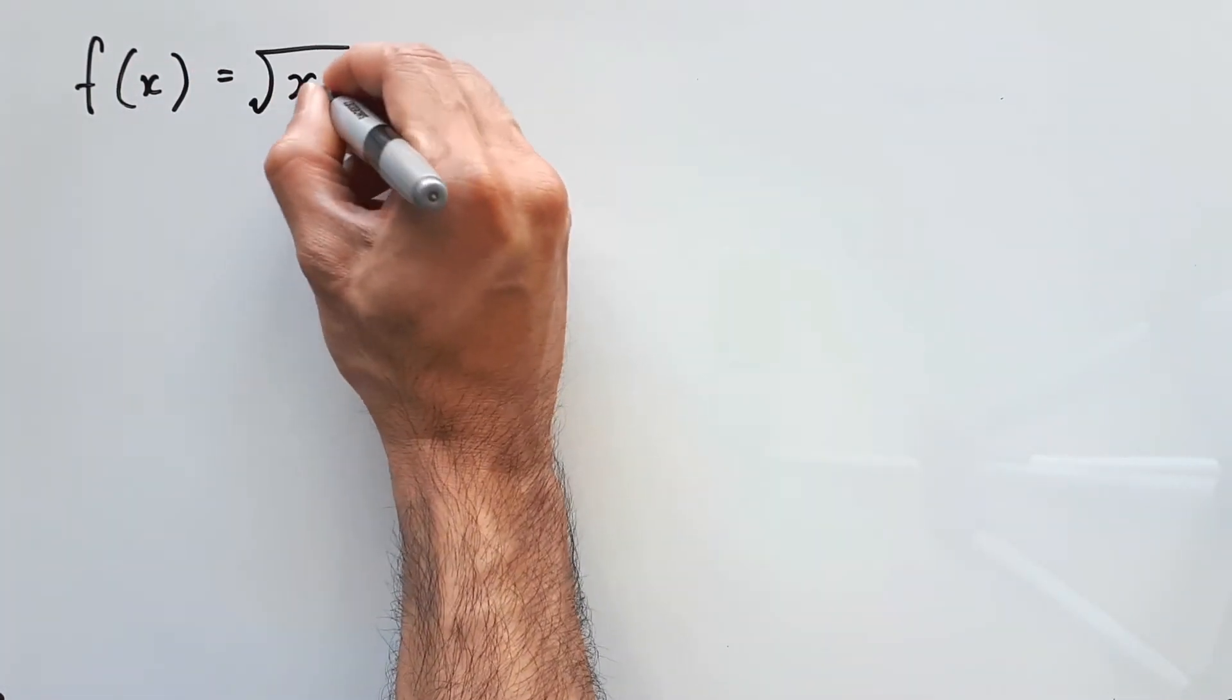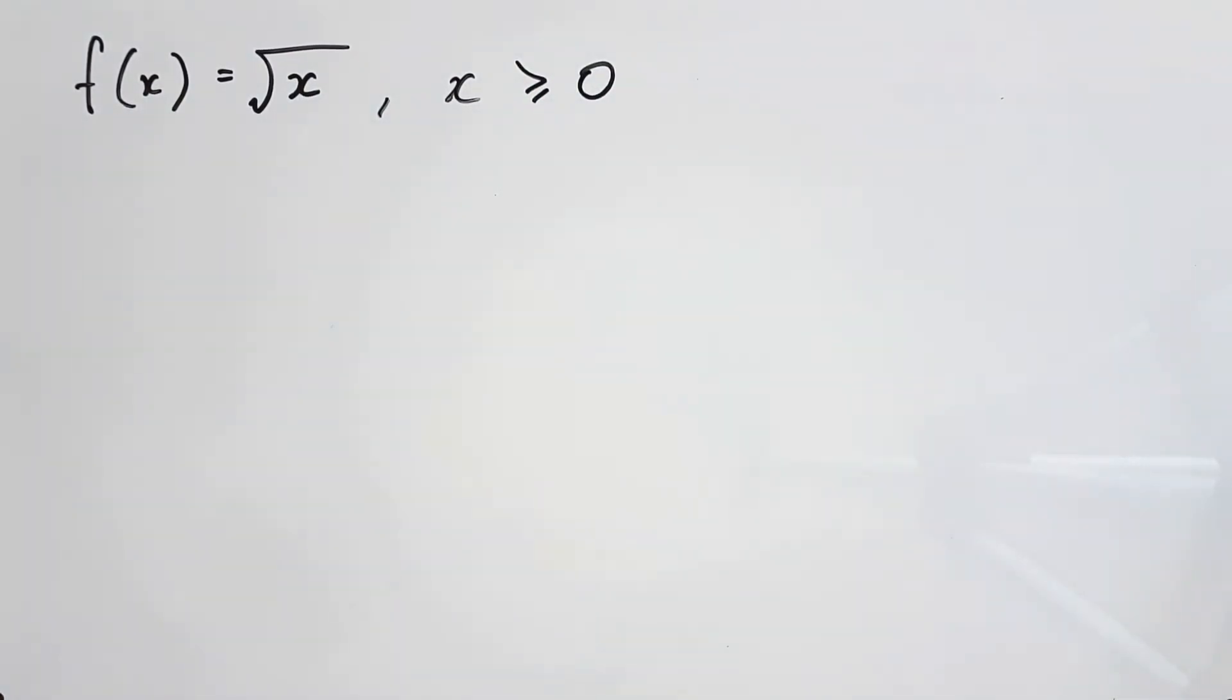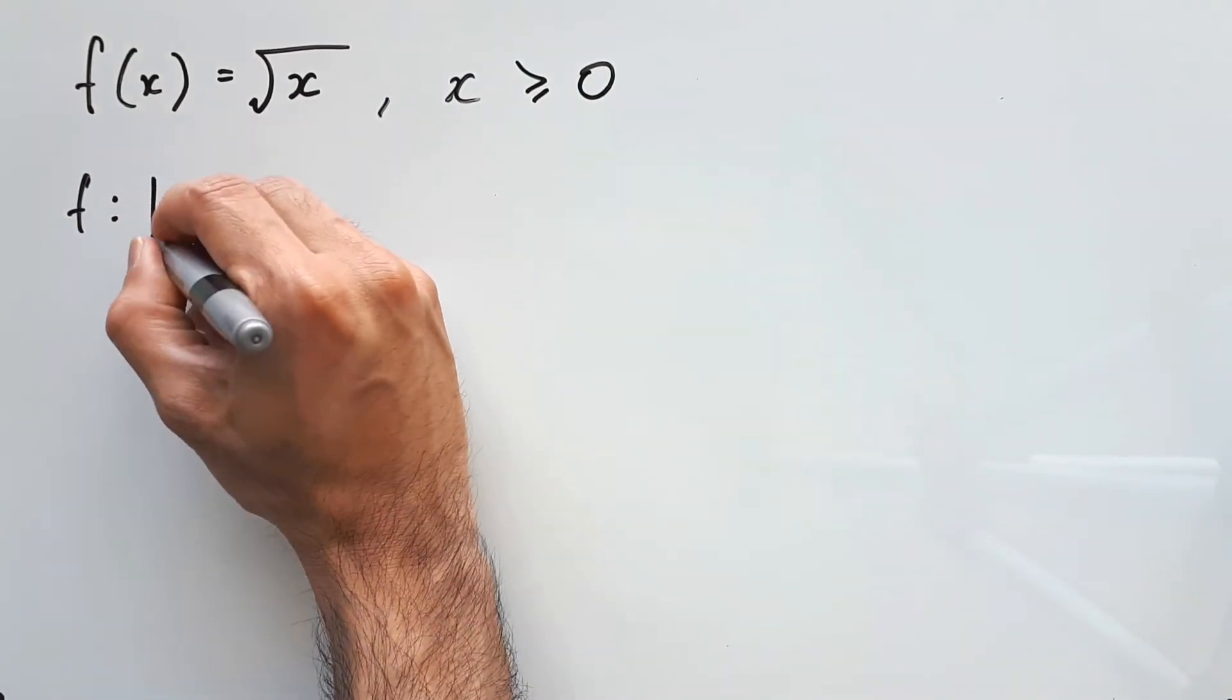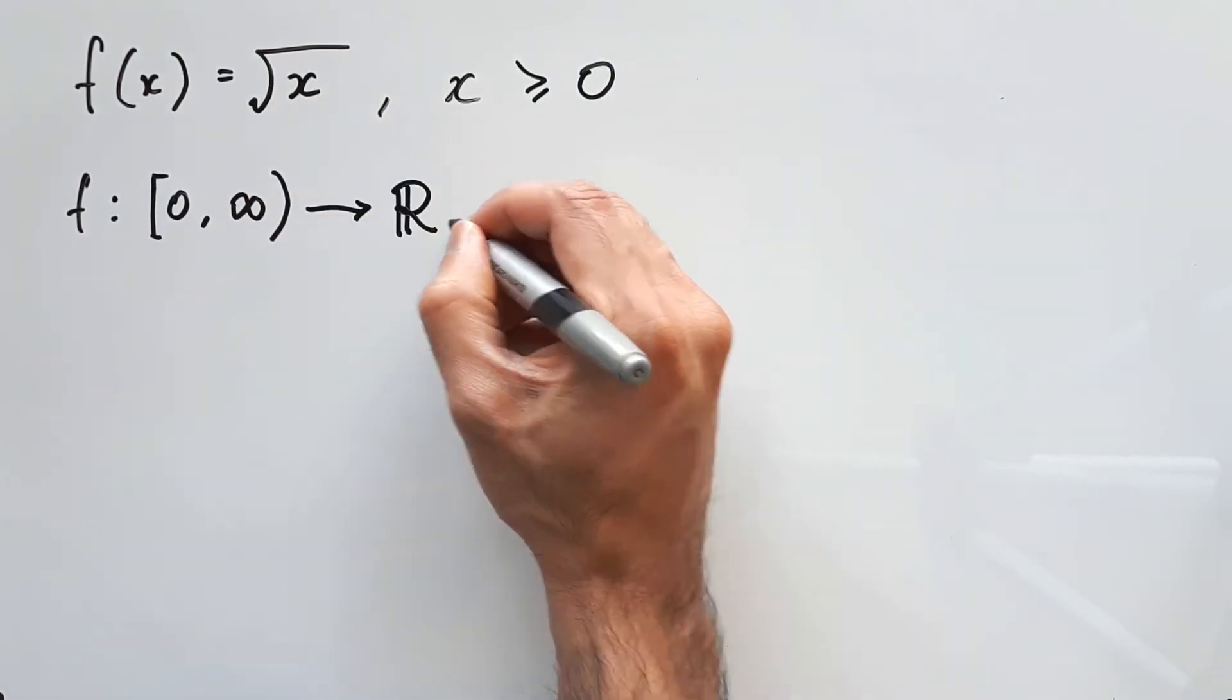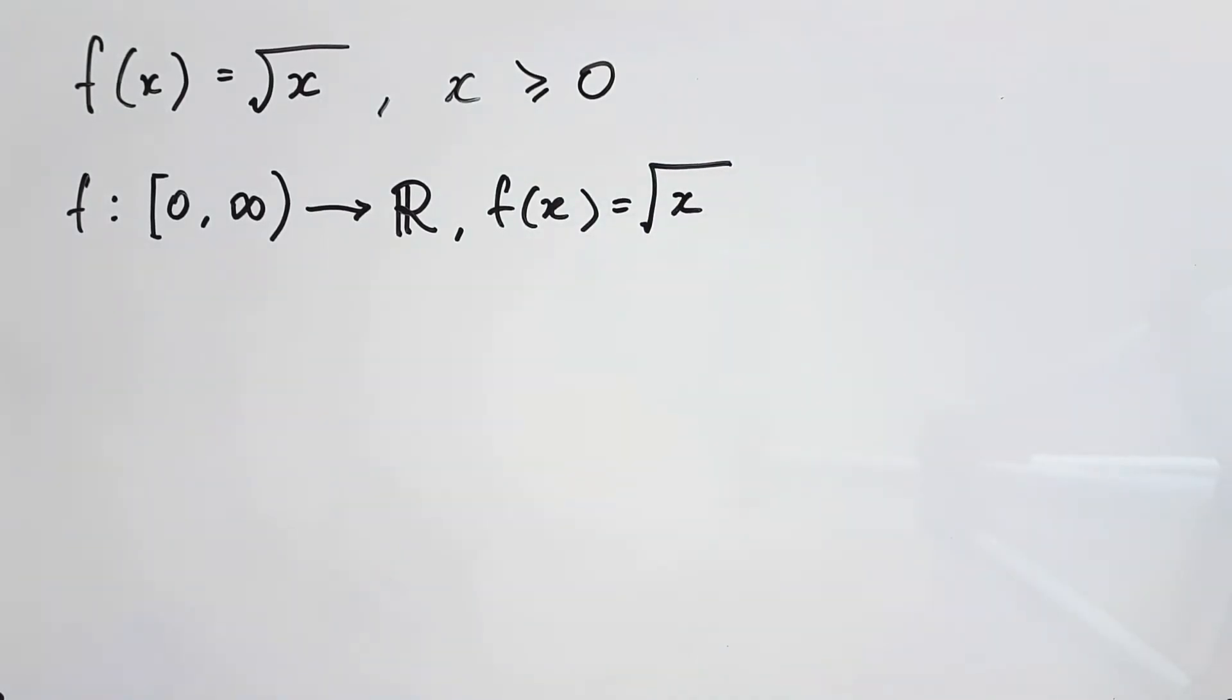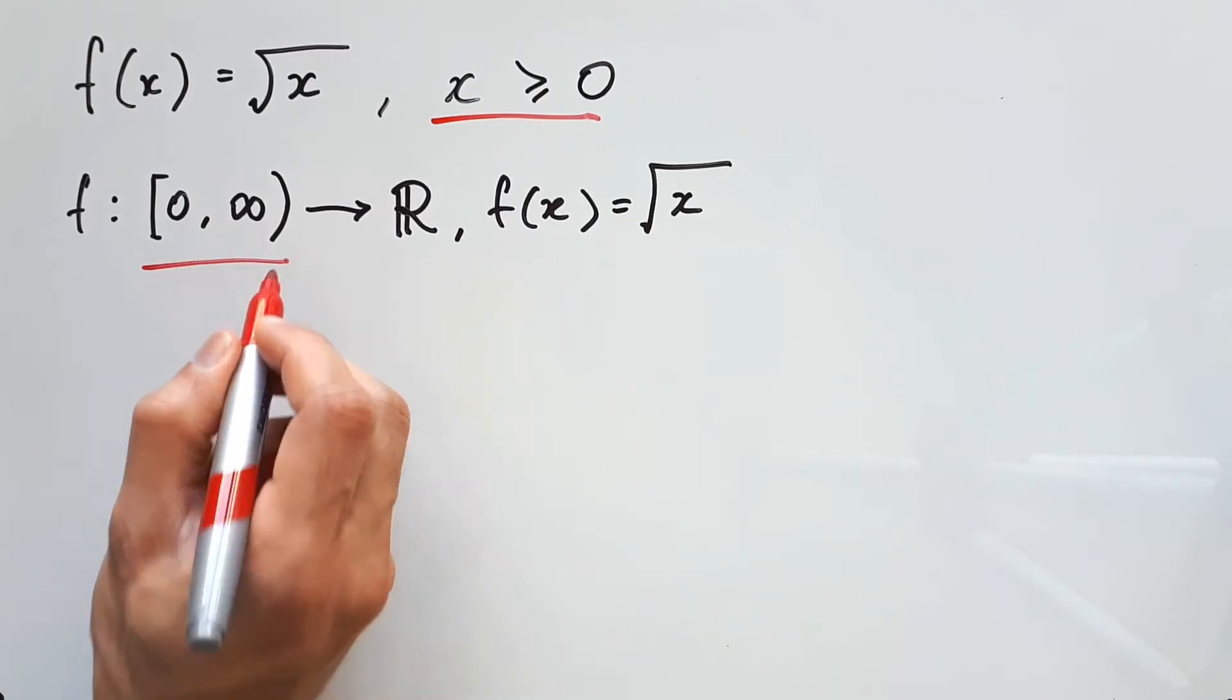So with our first example, let's say f(x) equals square root of x, and we're given the domain x is more than or equal to 0. They can also give this information to you in terms of function notation, by saying f is defined as its x values being between 0 to infinity, mapped onto the co-domain of all the real numbers, and f(x) has the rule of square root x. Either way, the domain is given in both cases, just in different formats.